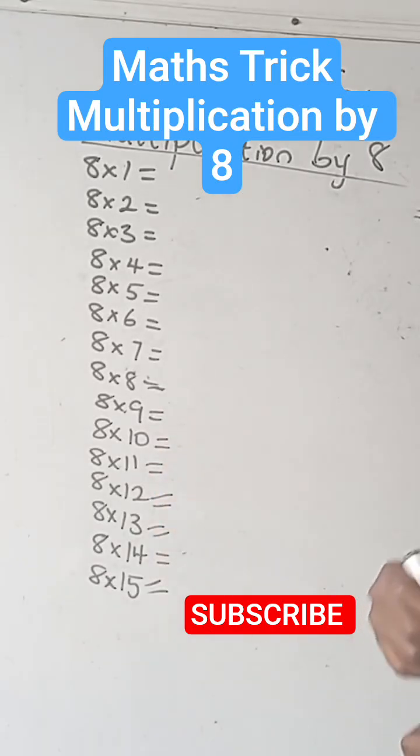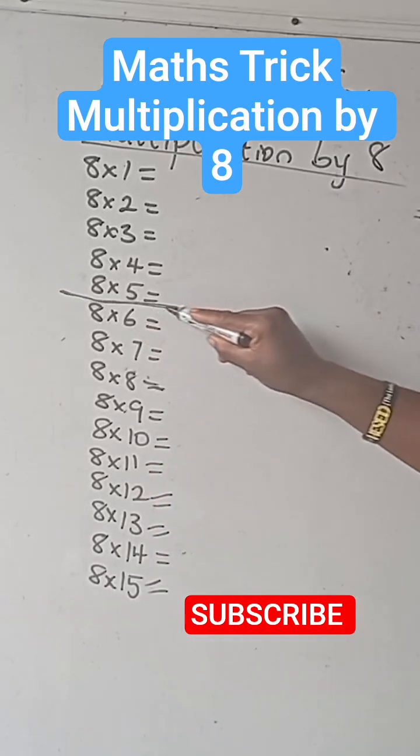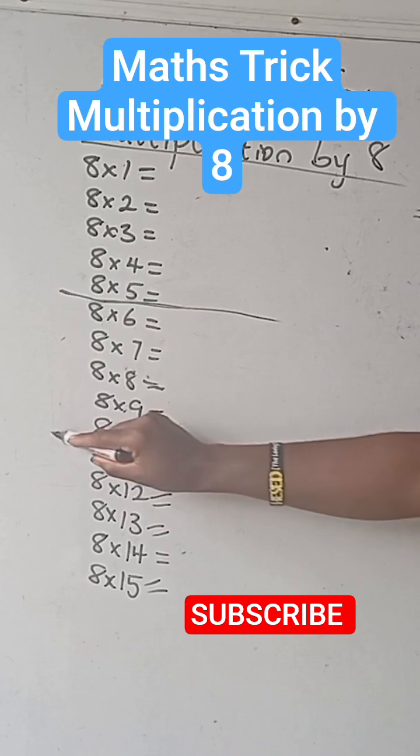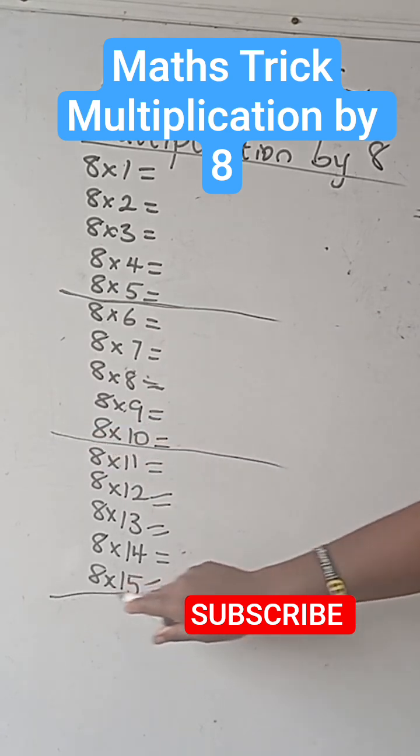When you multiply by 8 all through, what you simply do is the multiples of 5 cross a line. There's 10, and I have that of 15 already.